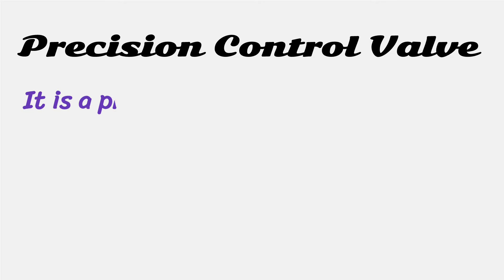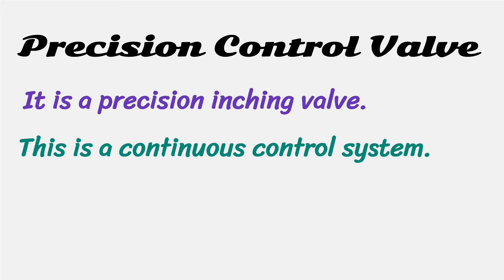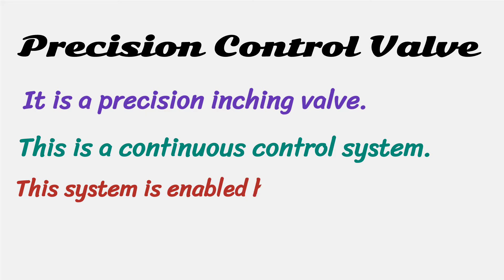The third one is the precision control valve. It is a precision inching valve. This is a continuous control system. This system is enabled by a proper feedback.